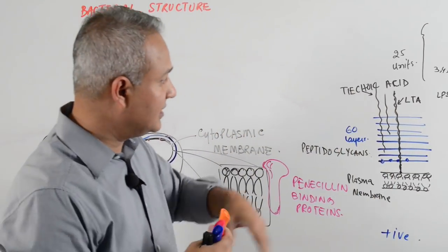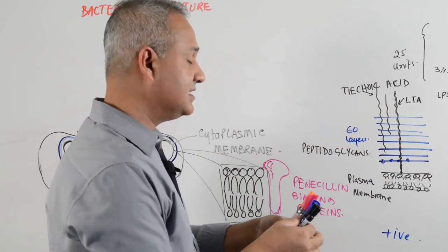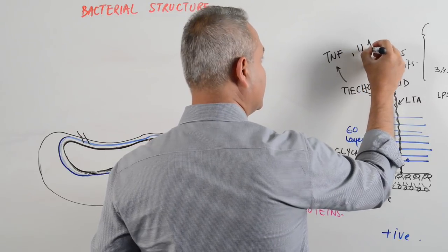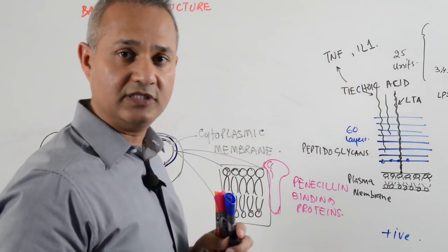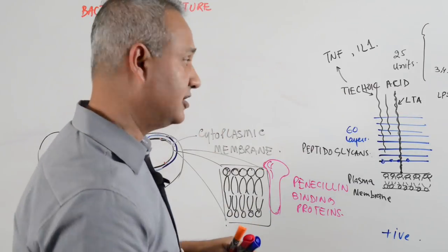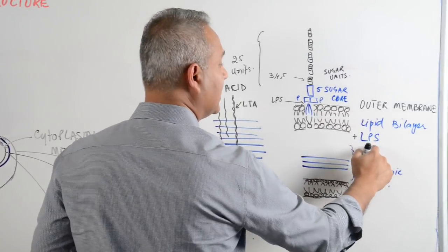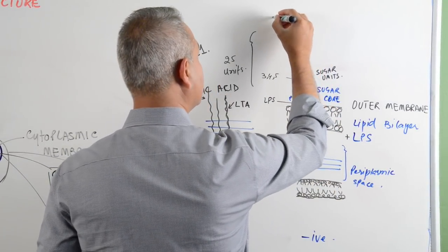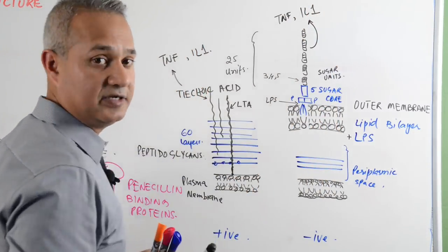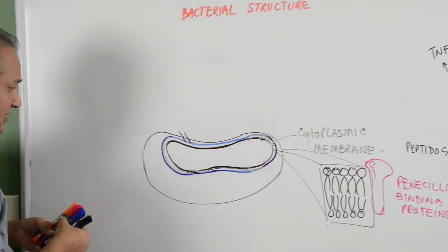The lipoteichoic and teichoic acids from gram positive bacteria are the ones which induce tumor necrosis factor (TNF) and IL-1. These will cause inflammation, fever, and can cause septic shock by creating a cascade of inflammatory responses. On the other hand, in gram negative bacteria, it is the lipopolysaccharides (LPS) which induce TNF and IL-1. In addition to these structures, there is a flagellum attached to the bacteria.